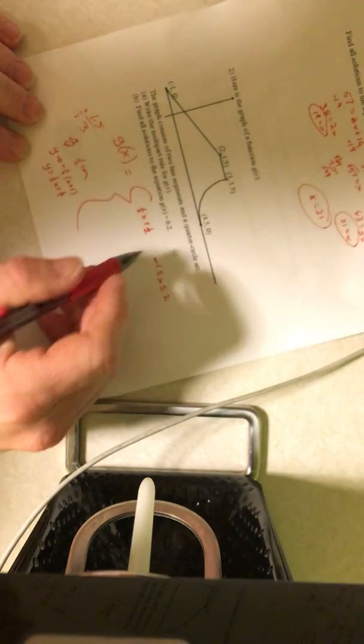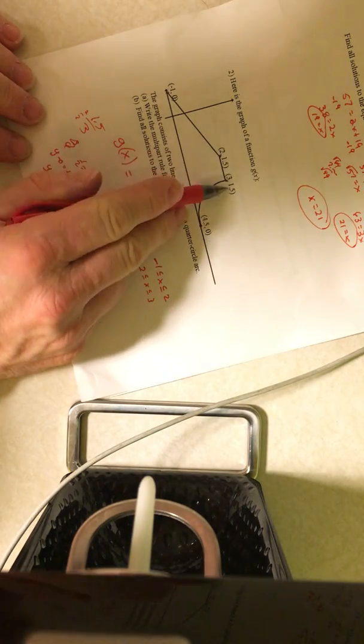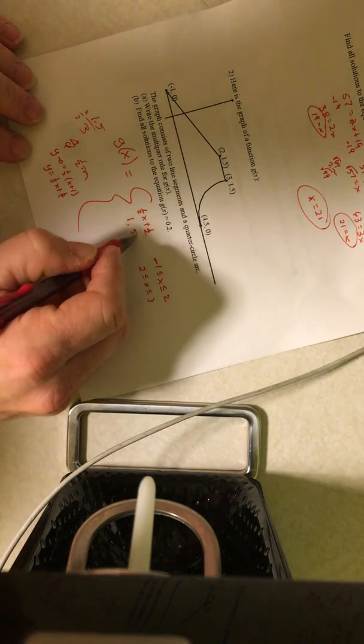Now if my x value goes from 2 to 3, then I want the y value to just be 1.5, so it's that constant function.